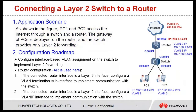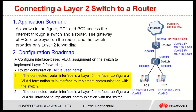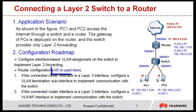The configuration roadmap is as follows. Configure an interface-based VLAN assignment on the switch to implement Layer 2 forwarding. If the connected router interface is a Layer 3 interface, configure a VLAN termination subinterface to implement communication with the switch. If the connected router interface is a Layer 2 interface, configure a VLAN IF interface to implement communication with the switch. The AR is used as an example; the configurations of other routers are similar.